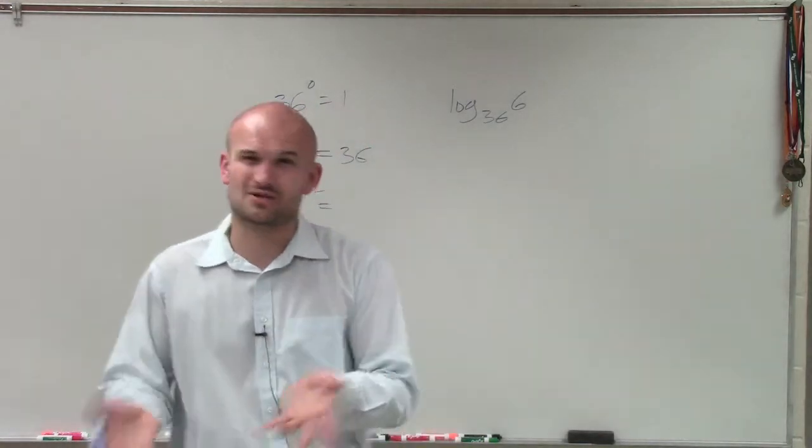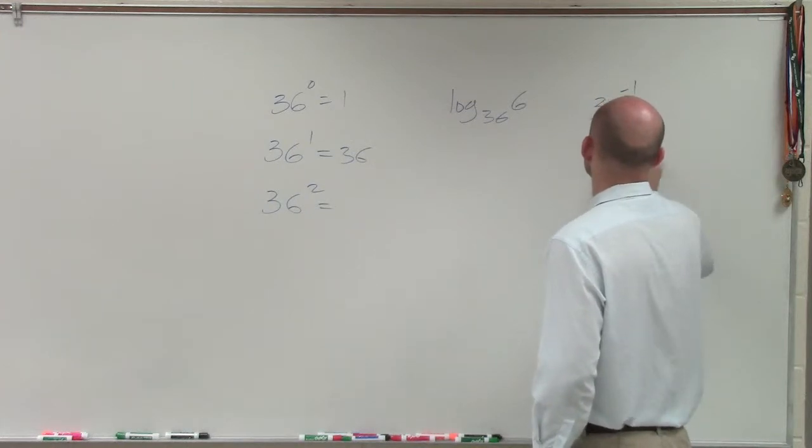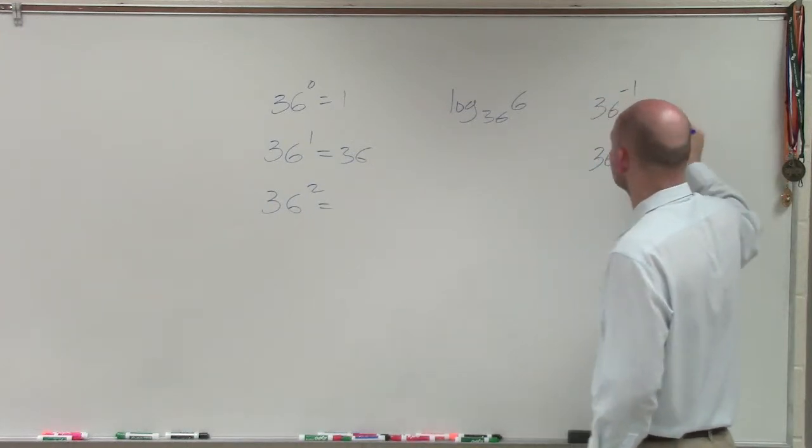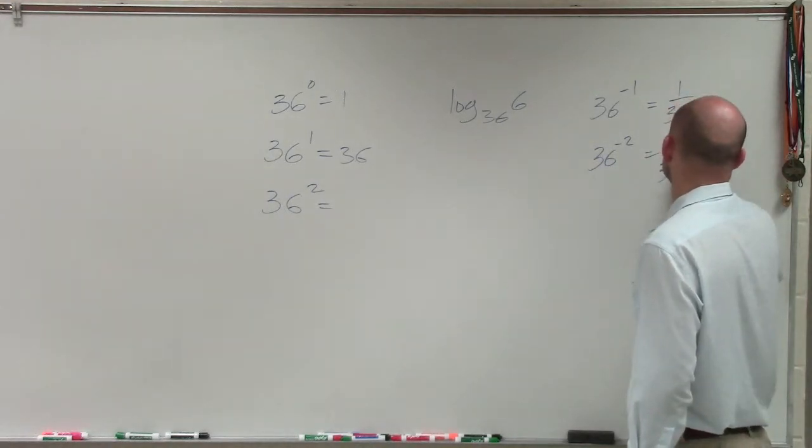So the next thing that we do is let's go and take a look at the negative numbers. So what about if I did 36 to the negative first, 36 to the negative second? Well, that's just going to leave me with 1 over 36, and that's just going to leave me with 1 over 36 squared.